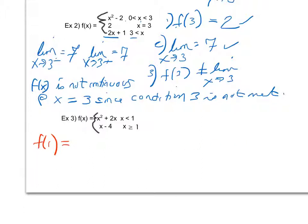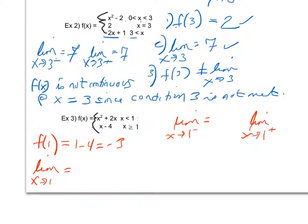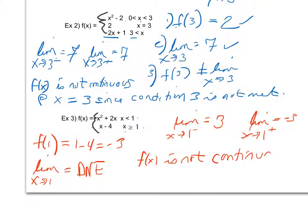For condition one, f(1): since x is greater than or equal to one, I use the bottom function. One minus four equals negative three. For condition two, I check the limit as x approaches one. From the left, I choose the top function and get one plus two equals three. From the right, I choose the bottom function and get one minus four equals negative three. Therefore, the limit as x approaches one does not exist, and f(x) is not continuous at x equals one since the limit does not exist.